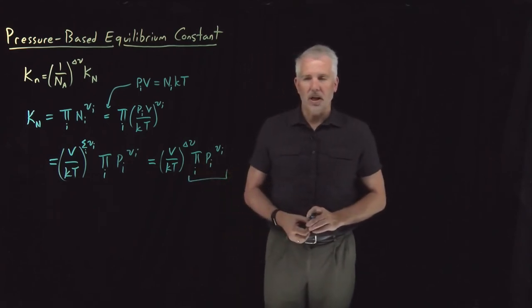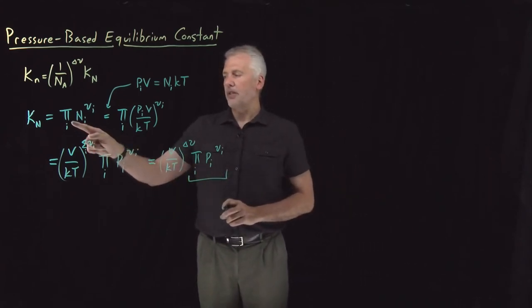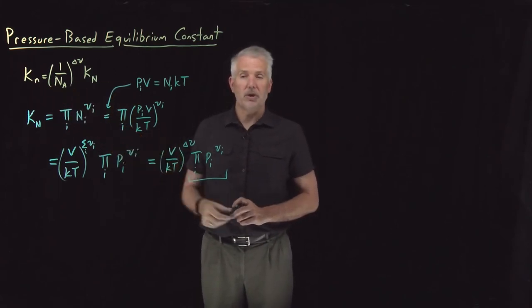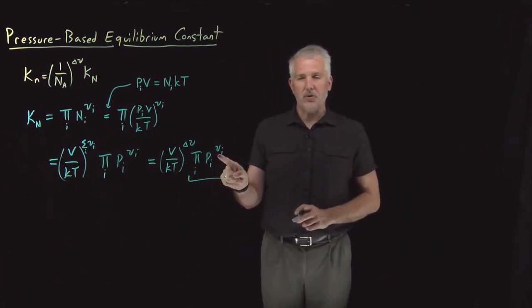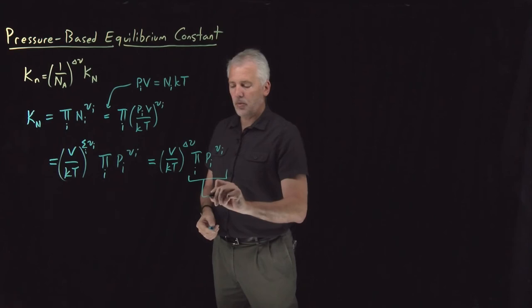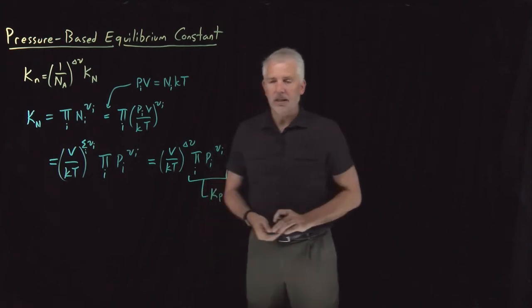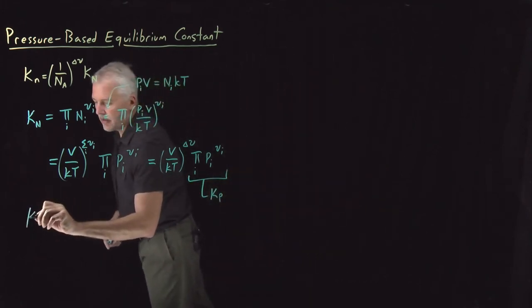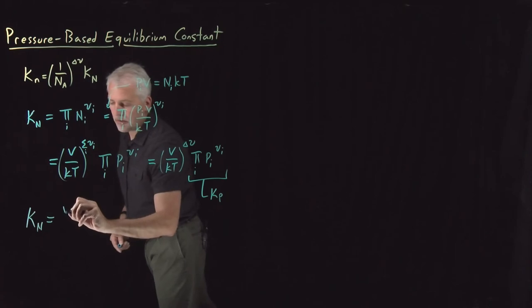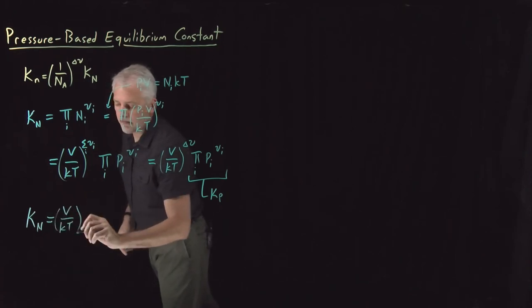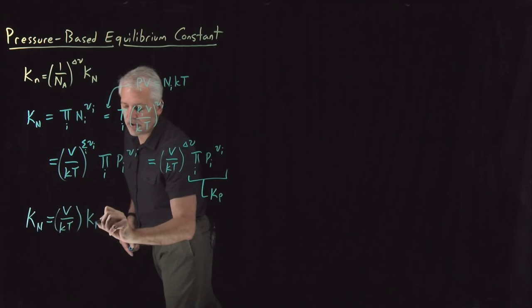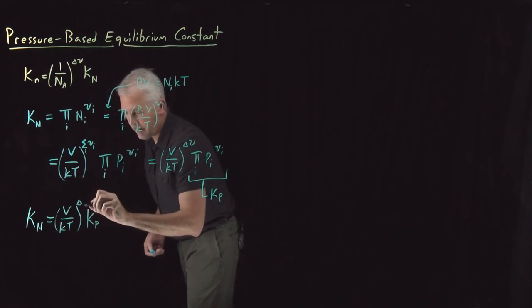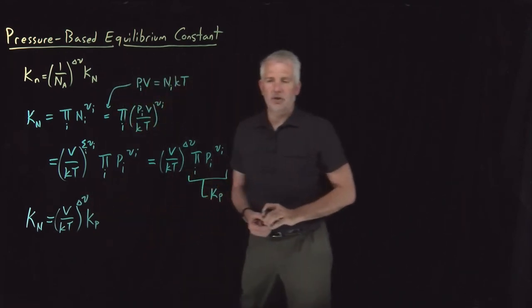This term looks a lot like an equilibrium constant. We know how to calculate equilibrium constant as molecules raised to stoichiometric coefficients, or this one would be moles raised to stoichiometric coefficients. This one is pressures raised to stoichiometric coefficients. So this thing we'll call KP, the equilibrium constant written in terms of pressures. So the result we've got is that the molecule-based equilibrium constant is equal to V over kT times the pressure-based equilibrium constant—or sorry, that V over kT is raised to this delta nu power.